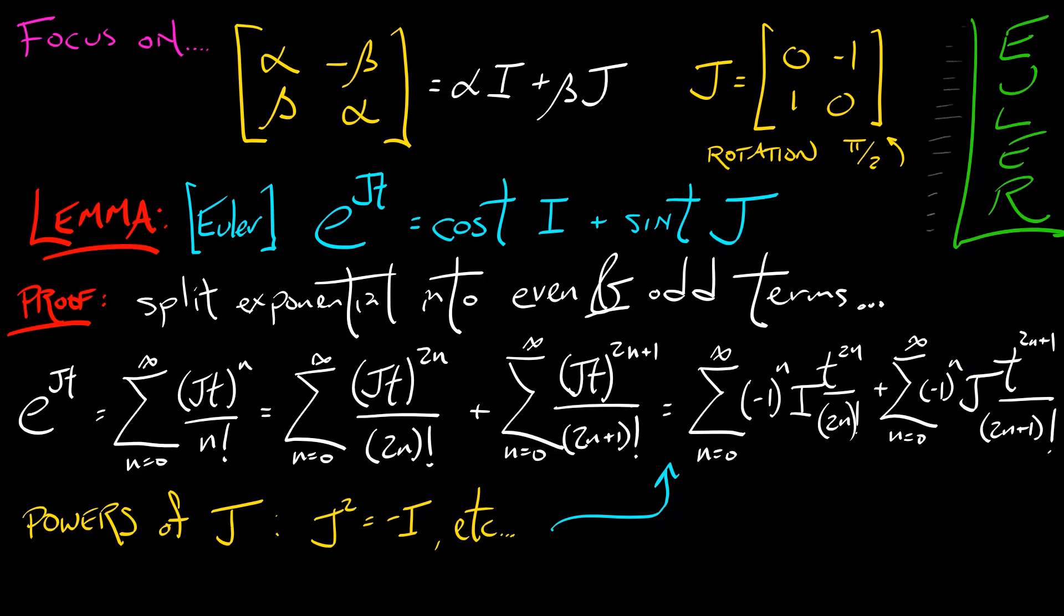The first of these, the even part, has the Taylor series for cosine of T built into it, all multiplied by the identity matrix I. The second term, the odd part, has the Taylor series for sine of T, everything multiplied by this matrix J. That's it. That's the proof of the Euler formula.